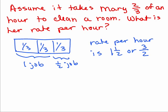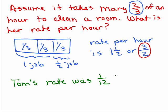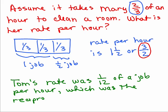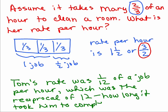Now, the interesting thing here that I want you to note, it's the reciprocal of how long it takes her to do a full job. So if it takes somebody 2/3 of an hour to do something, the reciprocal of that, 3/2, is their rate per hour. Just like with Tom, Tom's rate was 1/12 of a job per hour which was the reciprocal of 12, how long it took him to complete the job. So if it takes you x hours to do something, then your rate is 1 over x. It's the reciprocal.